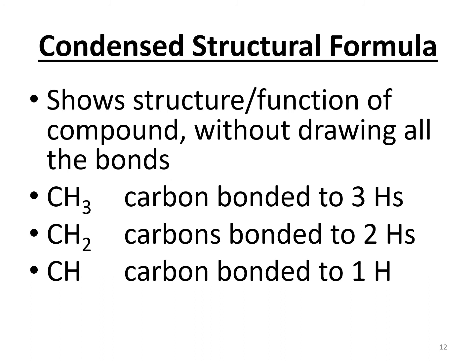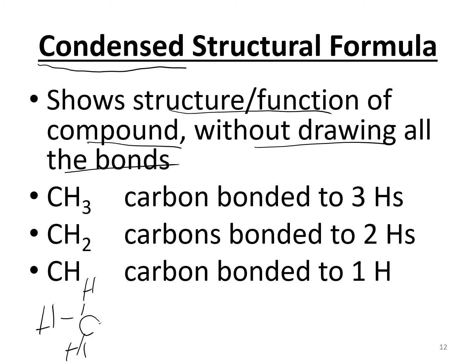A condensed structural formula shows bonding arrangement without drawing every bond explicitly — it's a shortcut that still shows structure and function. For example, a carbon attached to three hydrogens is written as CH₃; carbon with two hydrogens is CH₂; carbon with one hydrogen is CH. This is a more compact way to represent organic structures.